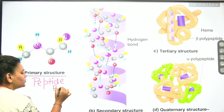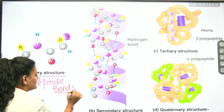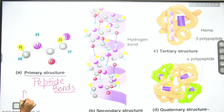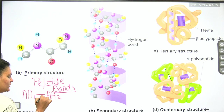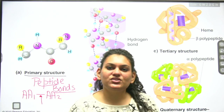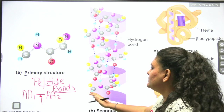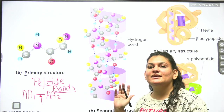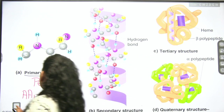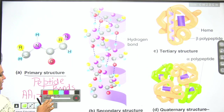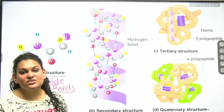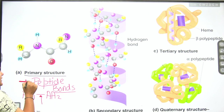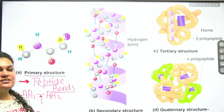Two amino acids are linked together via peptide bonds. For example, amino acid 1 and amino acid 2 are joined by a peptide bond — this simple structure is what we call the primary structure of protein. It involves only peptide bonds connecting amino acids into a chain.